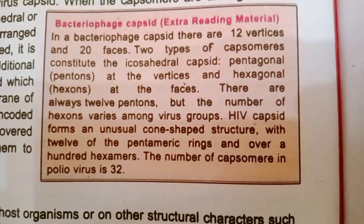The HIV capsid forms an unusual cone-shaped structure with 12 pentameric rings and over 100 hexamers. The number of capsomers in the poliovirus is 32.